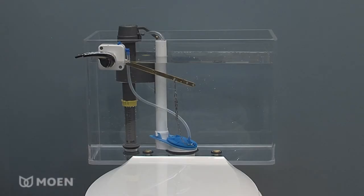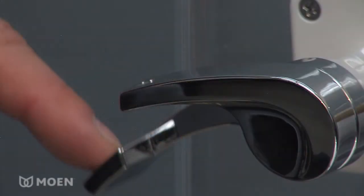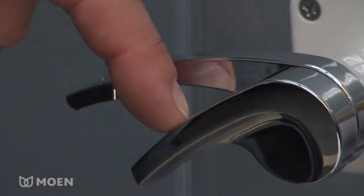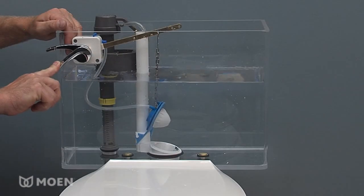The installation is now complete. Replace the tank lid. Remember that the longer lever is a half flush for liquid waste and the shorter inside lever is a full flush for solid waste.